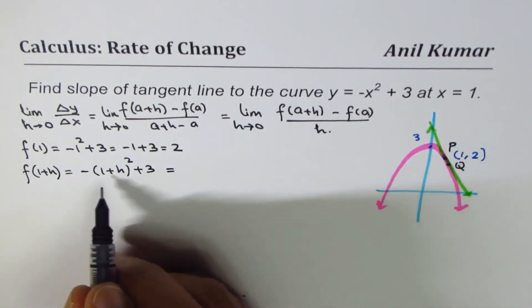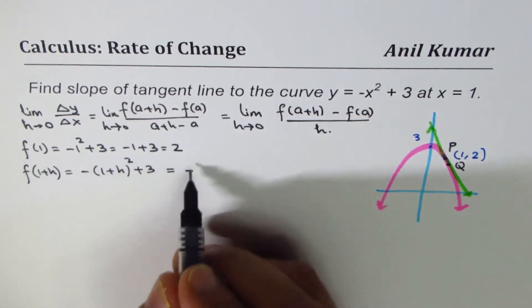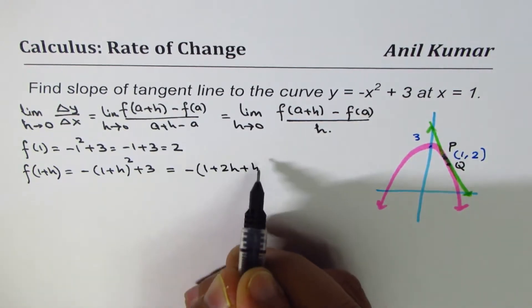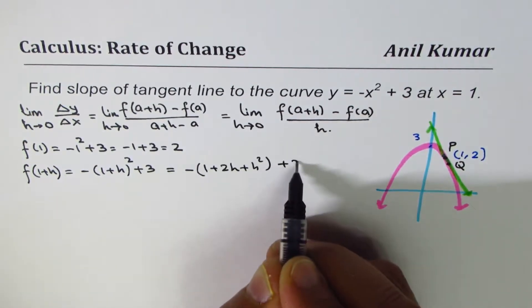And that gives us minus, we will apply the formula, a² + 2ab, which is -(1 + 2h + h²) + 3.